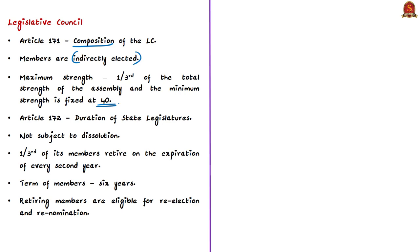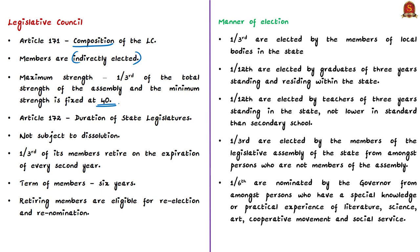Of the total members of a legislative council: one-third is elected by members of local bodies such as municipalities and district boards; one-twelfth are elected by graduates of three years' standing residing within the state; another one-twelfth are elected by teachers of three years' standing not lower than secondary school standard; and one-third is elected by members of the state legislative assembly from amongst persons who are not members of the assembly.